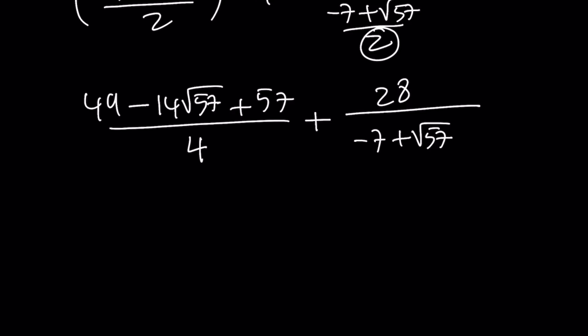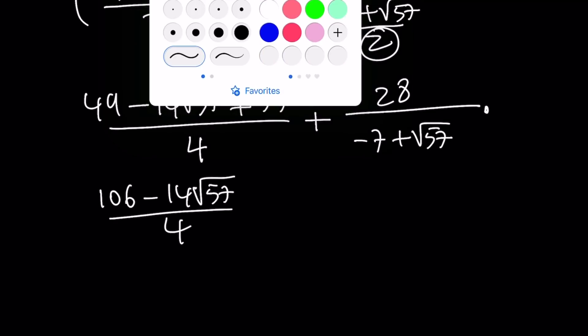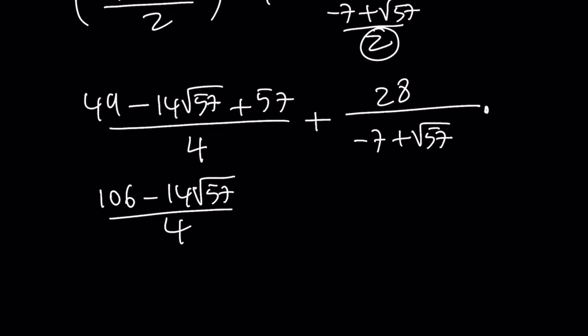So 49 plus 57 is going to be 106 minus 14 root of 57 divided by 4. And now, if you multiply this by the conjugate, you're going to get the following. It's going to be negative 7 minus root of 57, negative 7 minus root of 57. When you multiply these, you're going to get the difference of two squares, which is 49 minus 57.